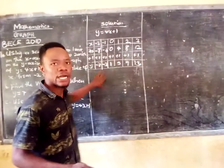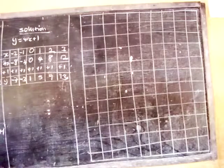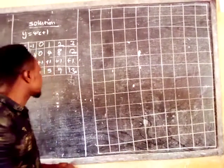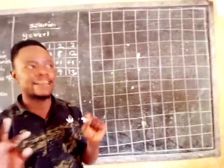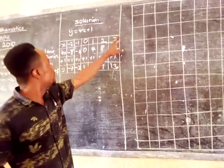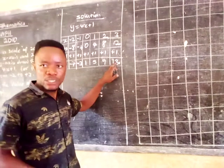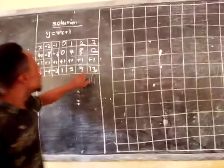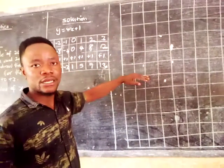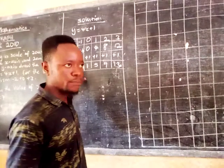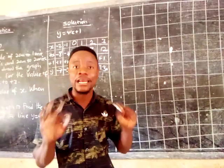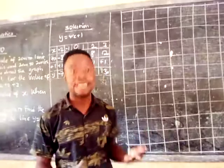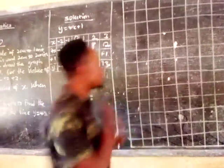Now we have this information and we want to plot it on a graph. When plotting, note that the highest x value is 8 and the highest y value is positive 13, while the lowest y value is minus 7. This question involves a linear graph — a straight line graph, also called a coordinate graph at BECE level.